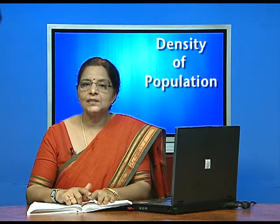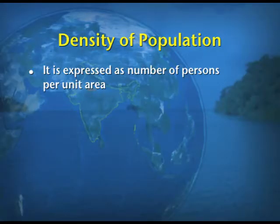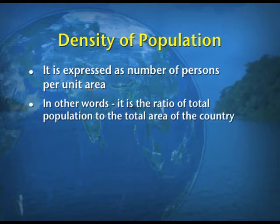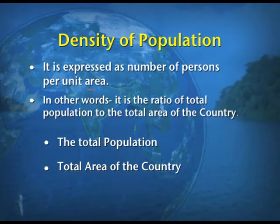The question is: what is the meaning of the word density? It is expressed as the number of persons per unit area. In other words, it is the ratio of the total population to the total area of the country. So we are taking up two terms: one is the total population, and the other is the total area of the country. The formula is: total population divided by total area, and with this we get the density of population.